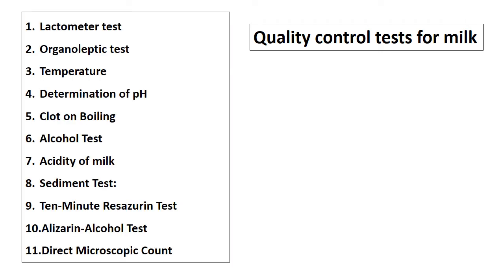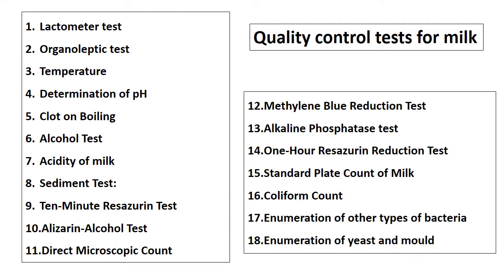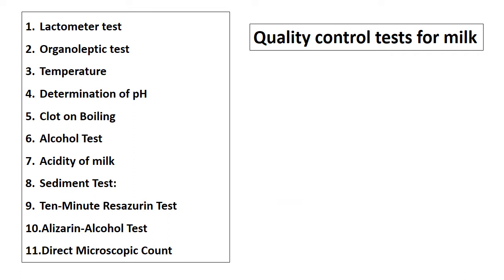The various quality control tests for milk include lactometer test, organoleptic test, determination of temperature, determination of pH, clot-on-boiling test, alcohol test, test for acidity of milk, sediment test, 10-minute resazurin test, alisarin alcohol test, direct microscopic count, methylene blue reduction test, alkaline phosphatase test, 1-hour resazurin reduction test, standard plate count, coliform count, enumeration of other types of bacteria, and enumeration of yeast and mould. We will discuss the first 11 analyses in this session; the rest will be discussed in the next video.